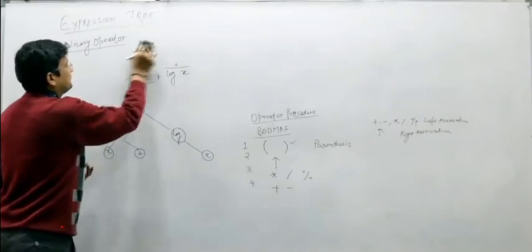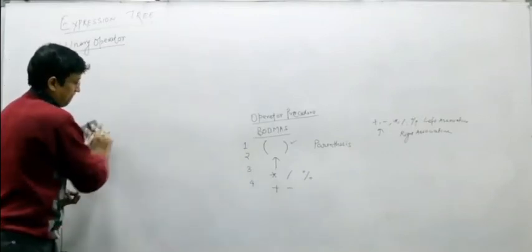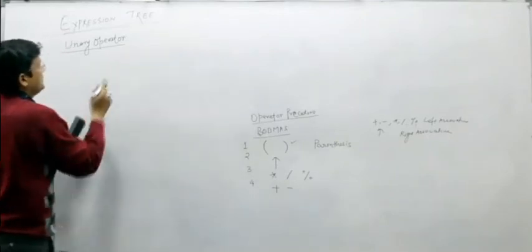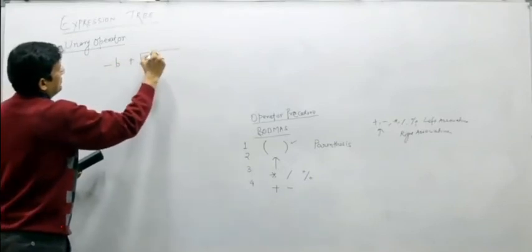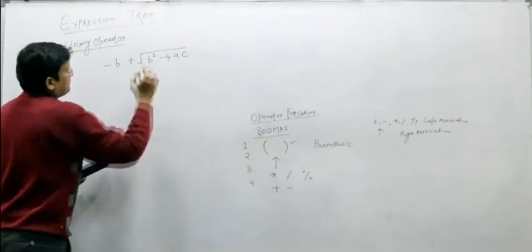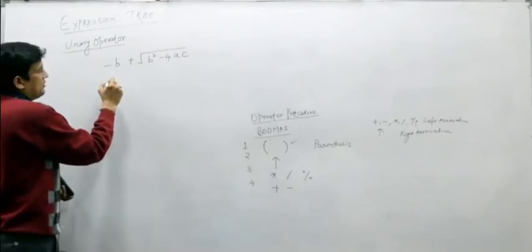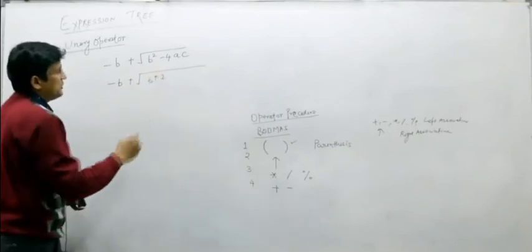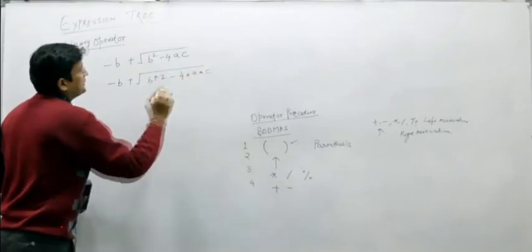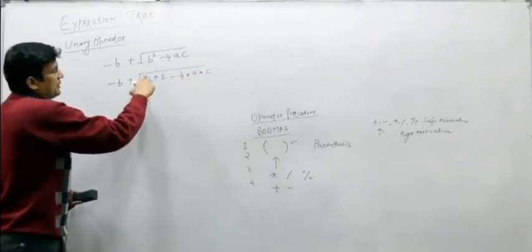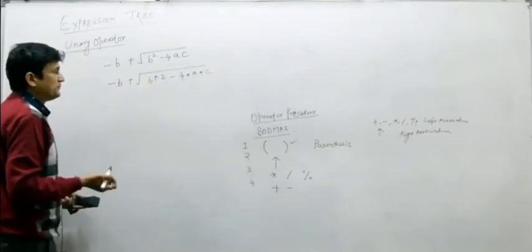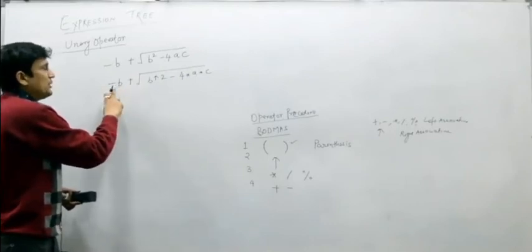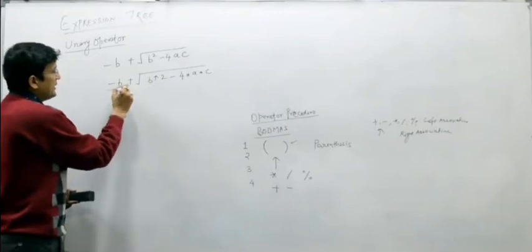Let us take another example: minus B plus under root of B squared minus 4AC. Converting to programming form: minus B plus under root of B raised to the power 2 minus 4 multiplied by A multiplied by C. The under root is applied on the entire sub-expression B squared minus 4AC. There are two unary operators here, so we go left to right: minus B is sub-expression 1.